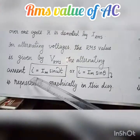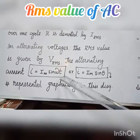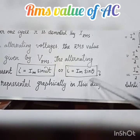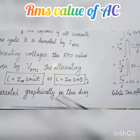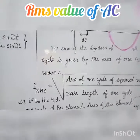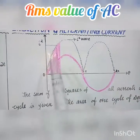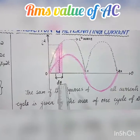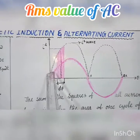The alternating current I is equal to I_m sin(ωt), or equivalently I = I_m sin(θ). This is represented graphically in the figure. The corresponding squared current waveform is also shown in the figure, indicated by a dotted line.